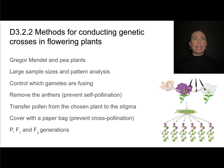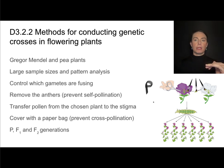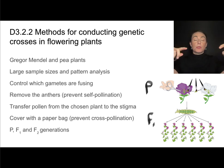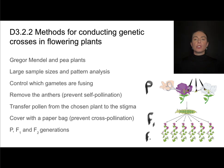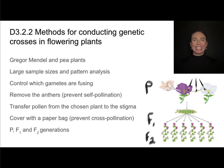He was able to study different traits through different generations. The original generation is what we call the parental generation. The offspring resulting from that parental generation are called the F1 generation. If you take individuals from that F1 generation and cross them together, you would get the F2 generation. Another great reason to use plants is that it doesn't matter that we're mating siblings together — we wouldn't want to do that with humans.